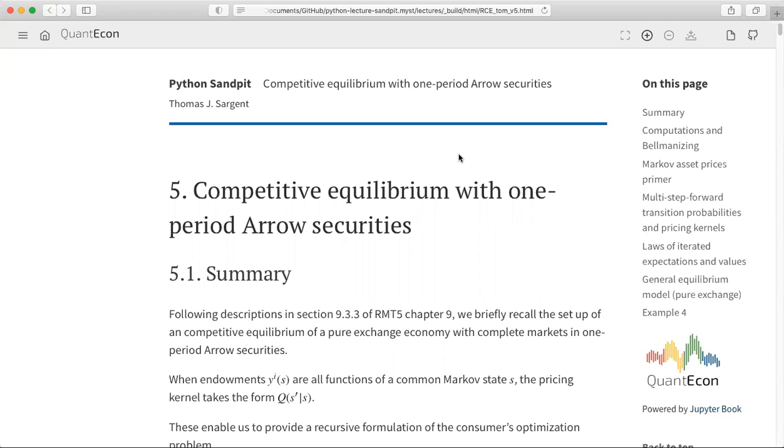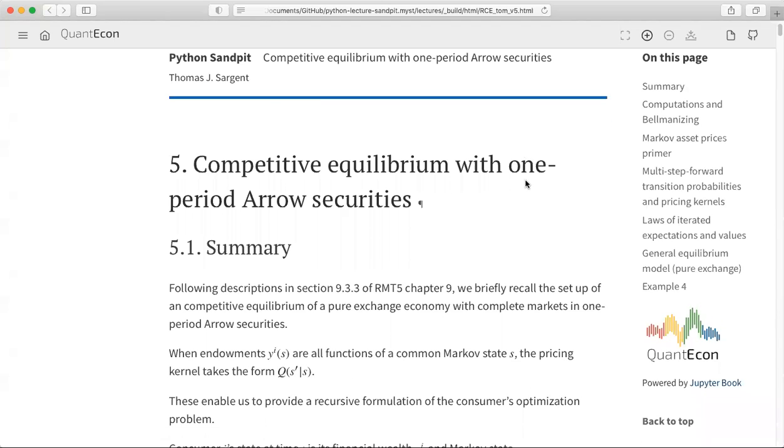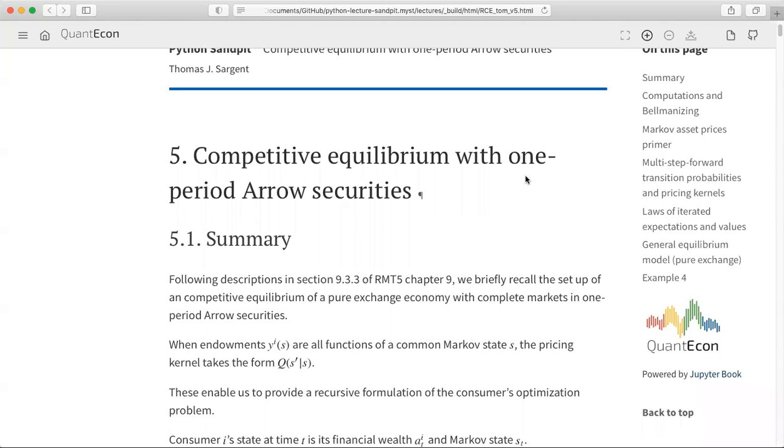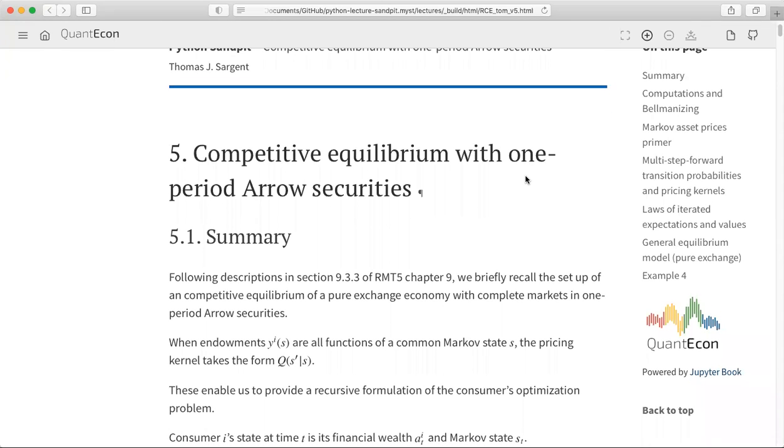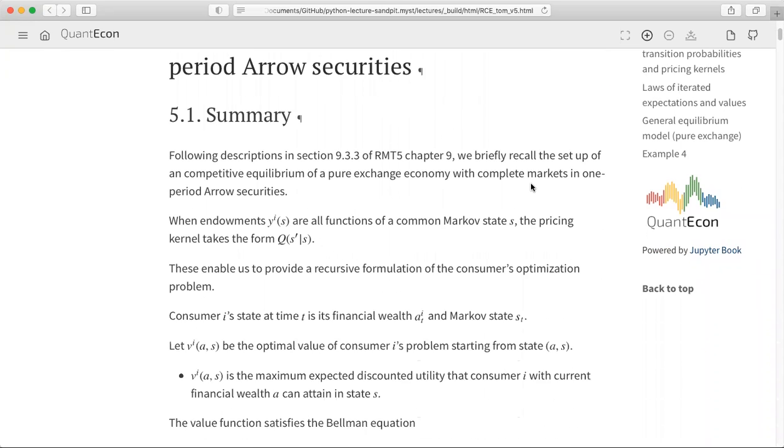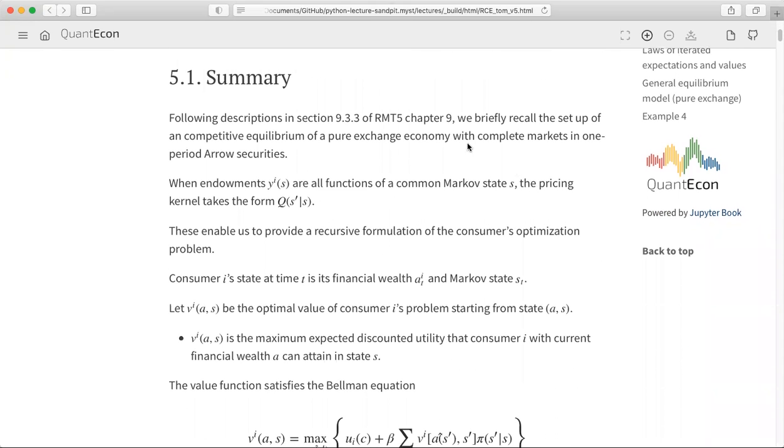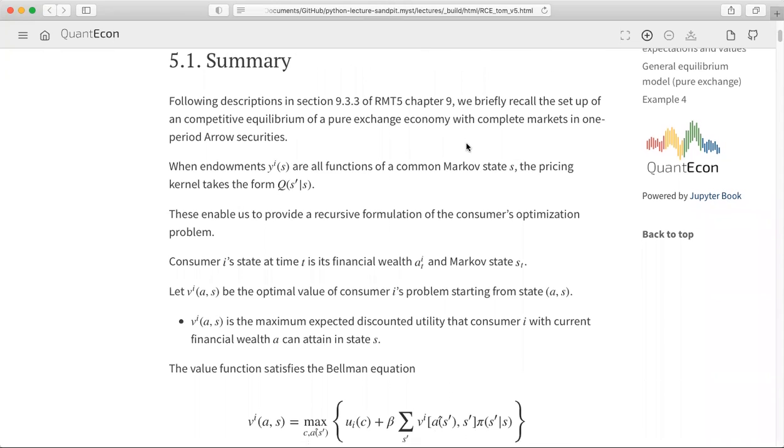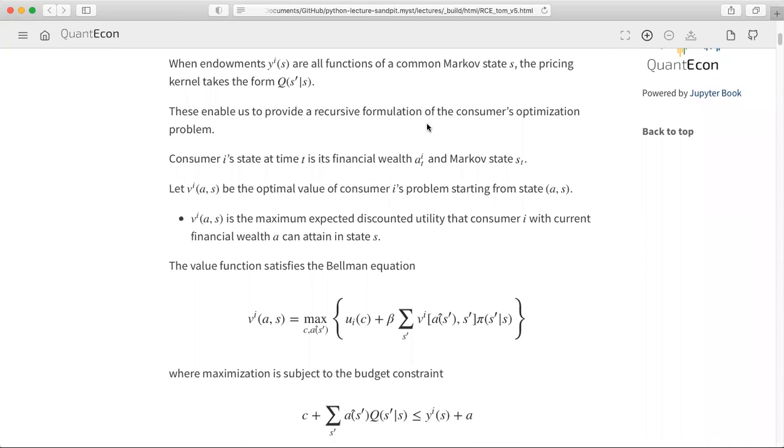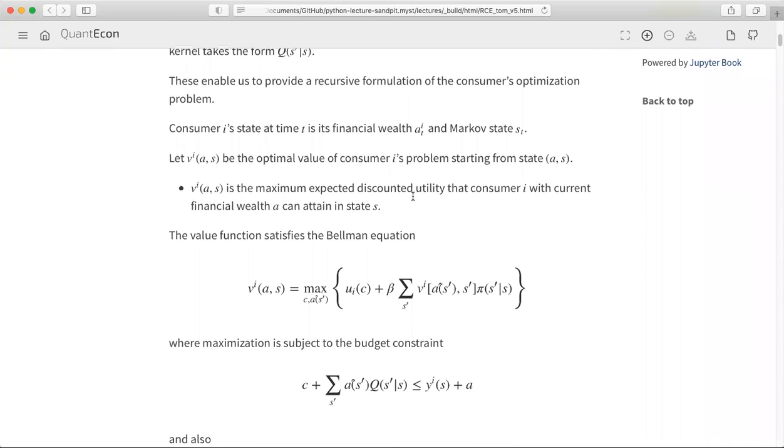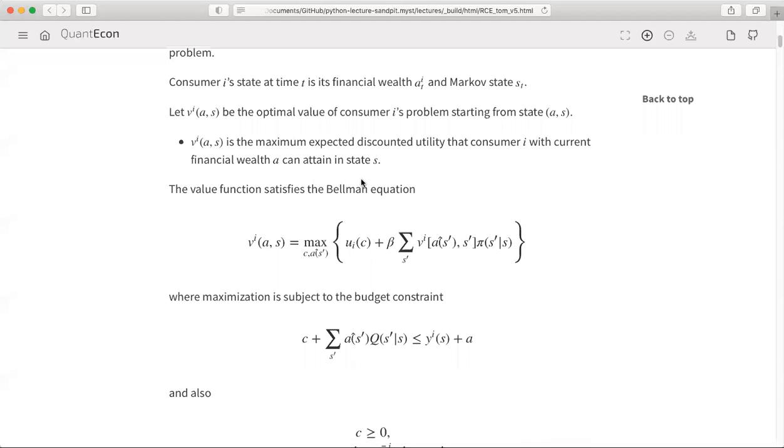I want to talk a little bit more about competitive equilibrium with one-period Arrow securities where we have a Markov state. I just want to add a few things and make a few observations. I'm using these lecture notes that I had before. This is a description of the setting.